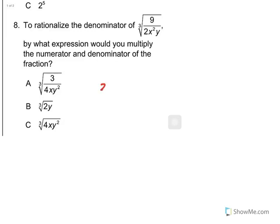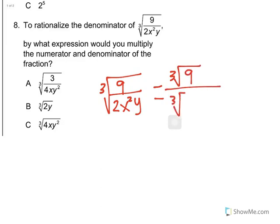So first we have the original expression, which is the cube root of 9 over 2x squared y. Now we have a rule that says on the bottom of a fraction we cannot have any root. So if we take apart this root, we would have the cube root of 9 over the cube root of 2x squared y.